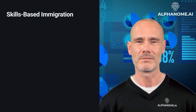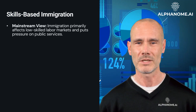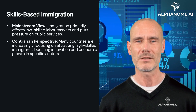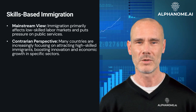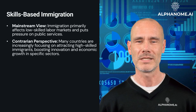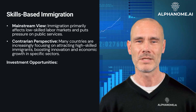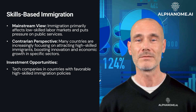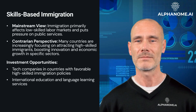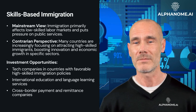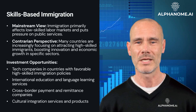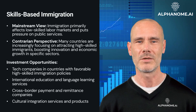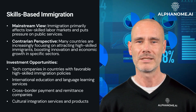Skills-Based Immigration. Mainstream view: immigration primarily affects low-skilled labor markets and puts pressure on public services. Contrarian perspective: many countries are increasingly focusing on attracting high-skilled immigrants, boosting innovation and economic growth in specific sectors. Investment opportunities include tech companies in countries with favorable high-skilled immigration policies, international education and language learning services, cross-border payment and remittance companies, and cultural integration services and products. Example: investing in Canadian tech companies like Shopify, which benefit from Canada's proactive approach to attracting skilled tech workers.